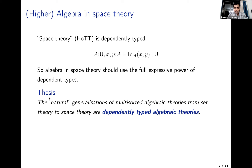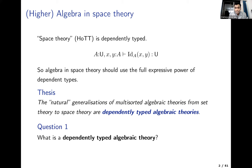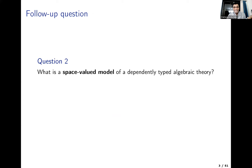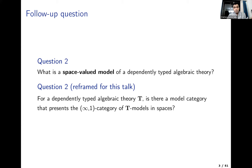It's somewhat natural to expect that the generalization of multi-sorted algebraic theories from set theory to HoTT — to space theory — should be dependently typed. They should incorporate type dependency in the syntactic definitions. This begs the question: what exactly is a dependently typed algebraic theory? Is there a nice definition? And the fond set or ego of HoTT is its models in spaces, so if we have a good notion of dependently typed algebraic theory, we should also have a good notion of its space-valued models. Is there a model category that presents its models in spaces as an infinity category?